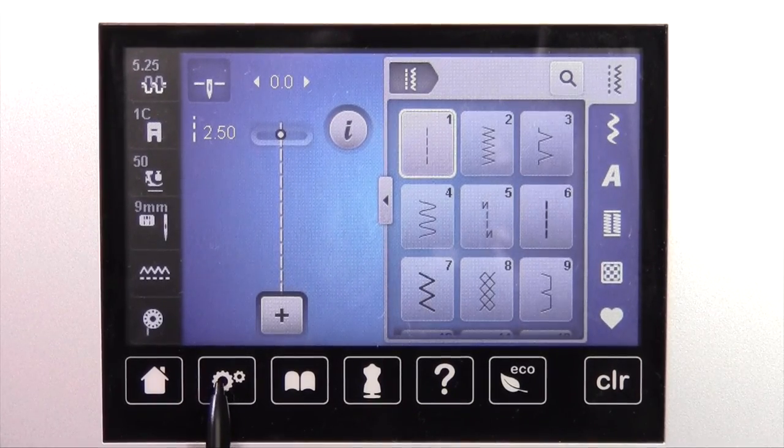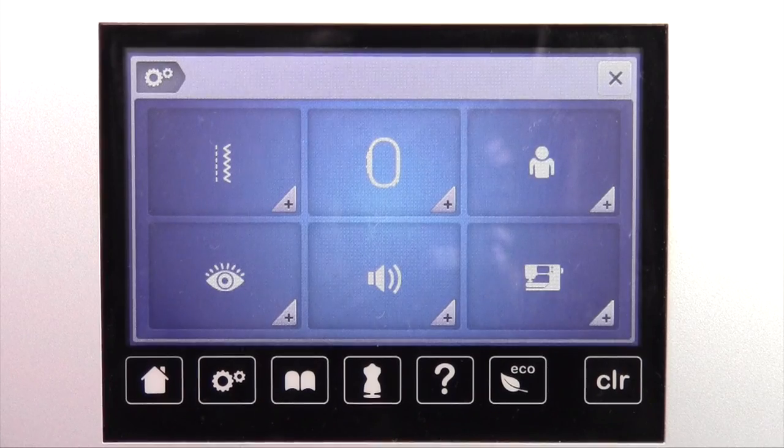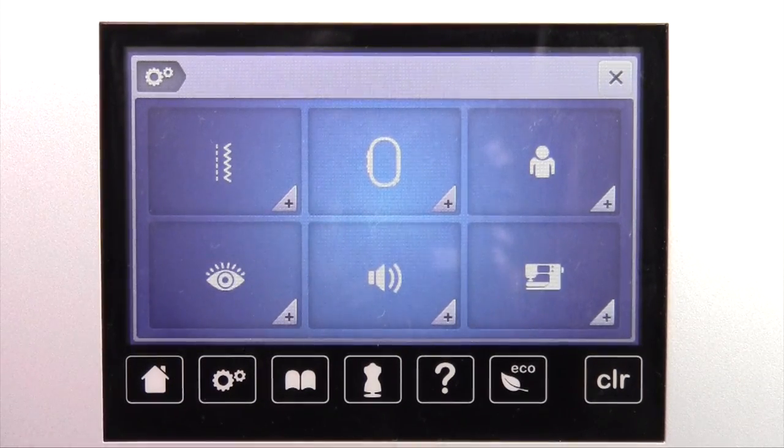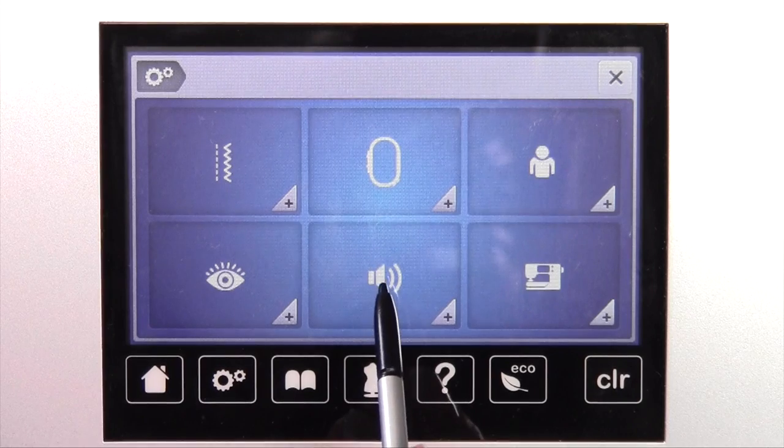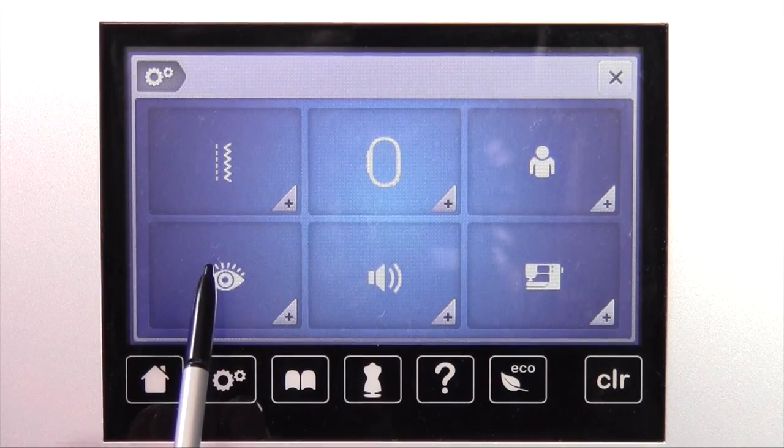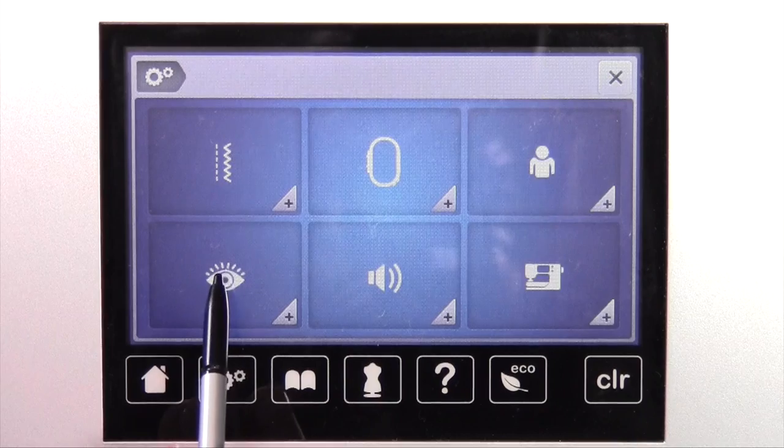Right down here is the setup program. When you touch that, we're going to get into areas of sewing, embroidery, calibrating, machine settings such as sound, or how it alarms when your thread breaks or your bobbin runs out.